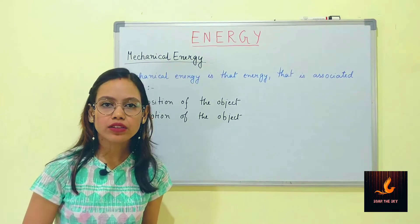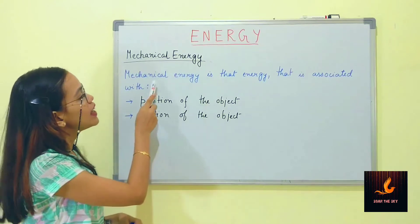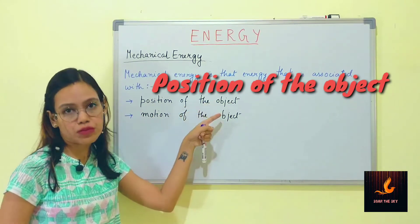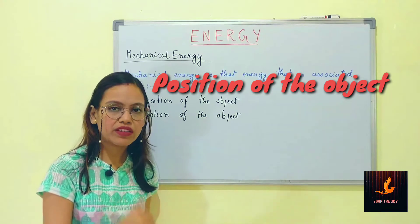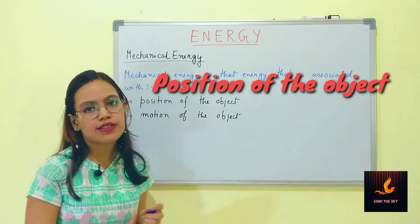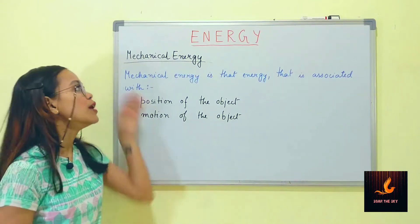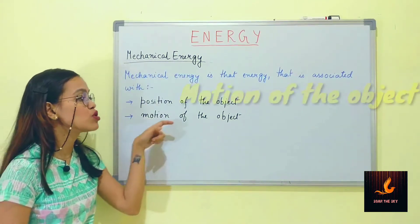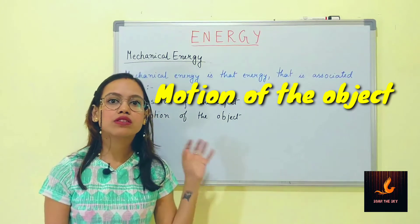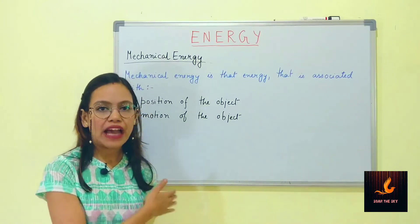Let's talk about mechanical energy. Mechanical energy is that energy associated with two things. First, the position of the object — whether it's at a particular height from the ground, whether it's moving or at rest. Second, the motion of the object — if a body is moving, what is its speed, how fast it's moving, whether it's moving slow or not. Both are factors associated with mechanical energy.